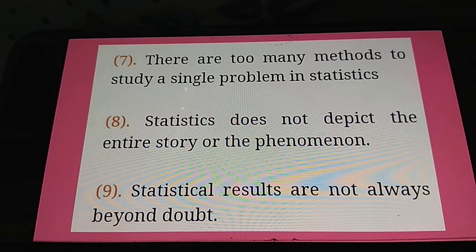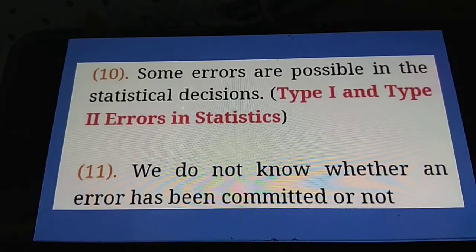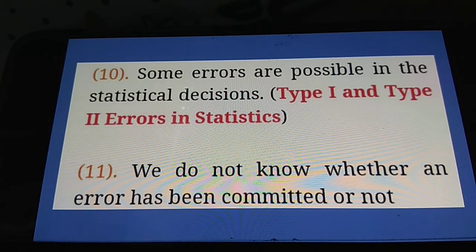Statistics does not always provide a complete picture. Statistical results will not always be perfectly accurate — some errors are possible. These include type one and type two errors in statistics, and we may not know which error has been committed.